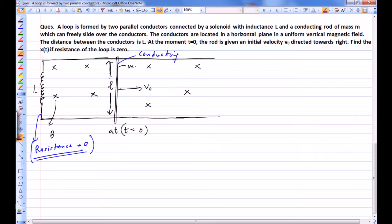On this instant it is going to act like a cell of potential difference BLV0. Yes, the current initially will be zero because it is an inductor—current cannot change instantly. What will happen a little later? This rod will reach here and there will be current in this direction. Let that current be I.